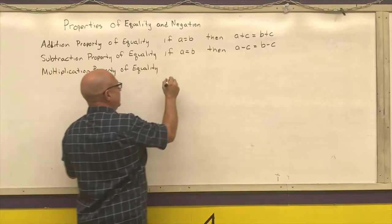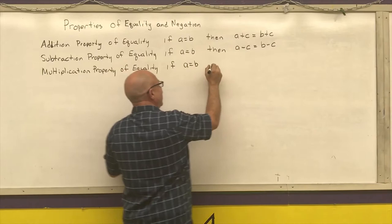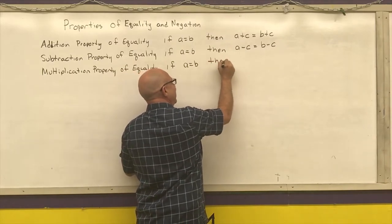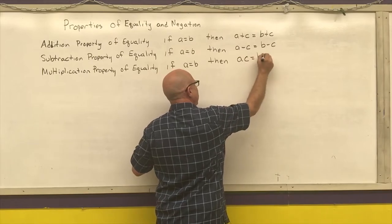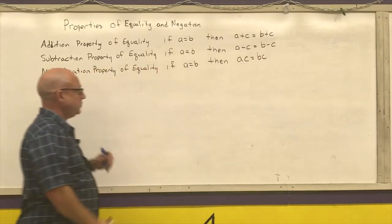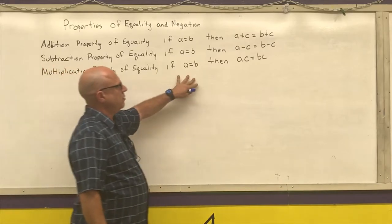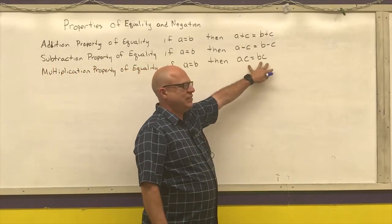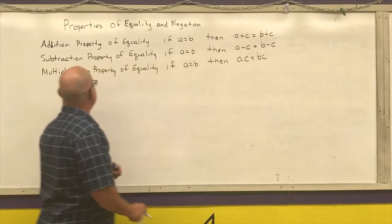So if A is equal to B, then A times C is equal to B times C. What this is stating is if I start out with two things that are equal, then I can multiply both sides by the same number, and I will still get a true statement.